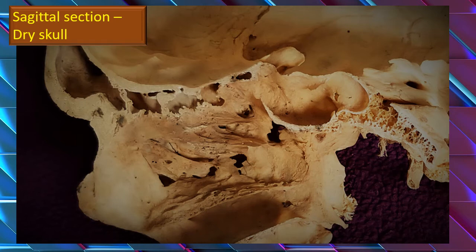Here is yet another parasagittal section of a dry skull. The lateral wall of the nasal cavity is partly intact, but the upper part is gone, bringing the ethmoidal sinuses into very clear view. Let's add or reinforce a few points we have already seen.